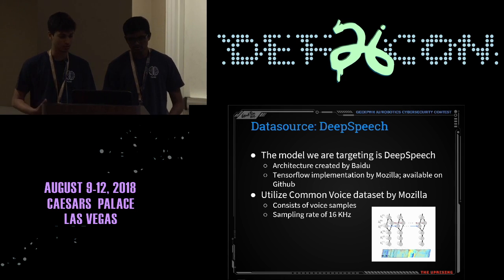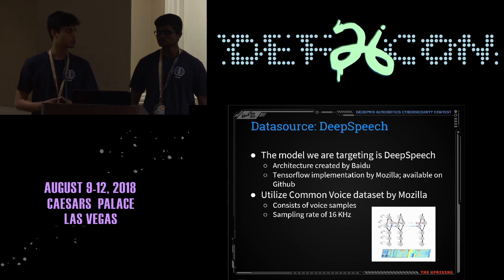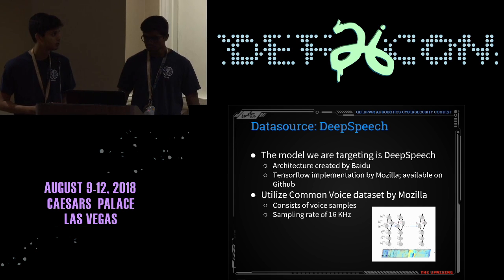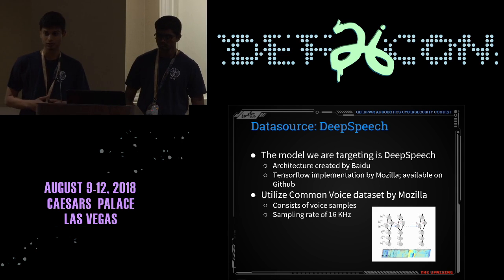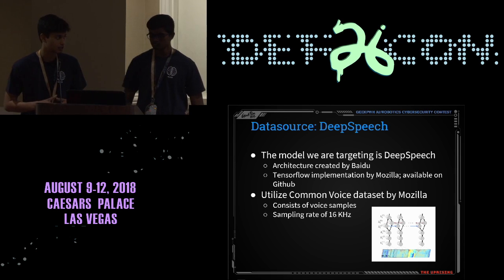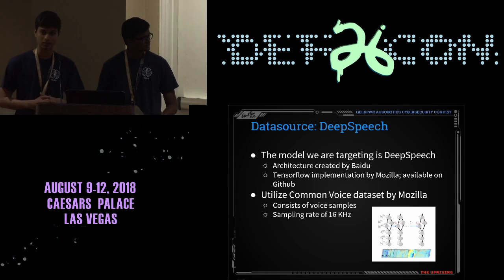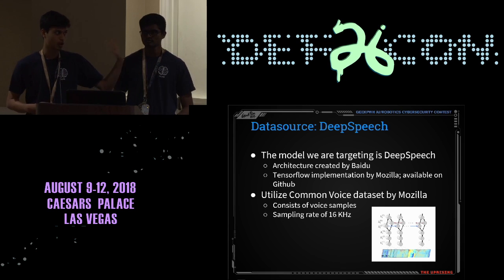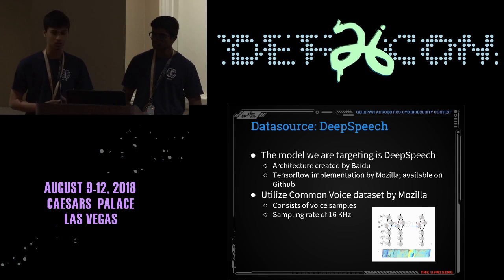The model we target is DeepSpeech — an architecture created by Baidu, implemented in TensorFlow by Mozilla, and available on GitHub as open source. The dataset we use is the Common Voice dataset, consisting of voice samples ranging from 3 to 7 seconds sampled at 16 kilohertz. As shown in the bottom-right diagram, DeepSpeech accepts an input spectrogram, passes it through convolutional layers and a stacked bidirectional LSTM, and outputs a distribution over the alphabet.